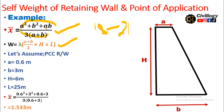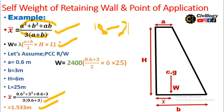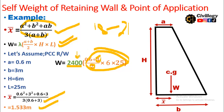Putting in the values — A plus 2B multiplied by A, divided by 3 times (A plus B) — we get x-bar equal to 1.533 meters. This is the point of application of the self-load of the retaining wall. For self-weight, we use W equals 2400 — which is the density of PCC — multiplied by the average width (0.6 plus 3) divided by 2, multiplied by height 6, multiplied by length 25. This gives the volume multiplied by density.